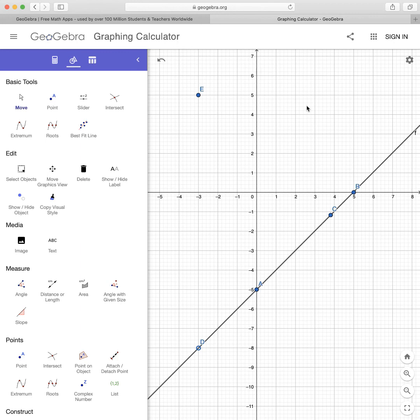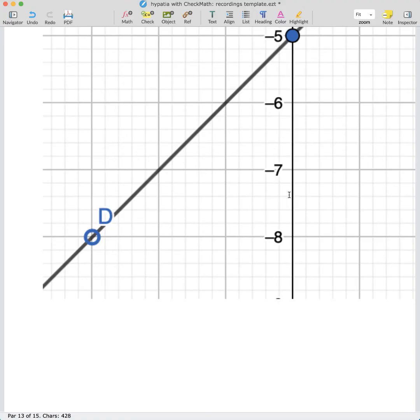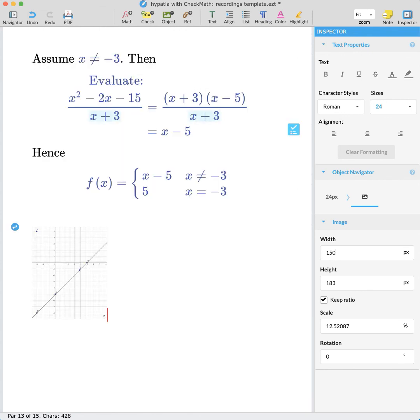So we can go ahead and take a screenshot, copy it to our clipboard, and then paste it into our Hypatia document. All right, now we've just pasted our image into Hypatia from the inspector. We can then scale it down, say to 150 pixels.